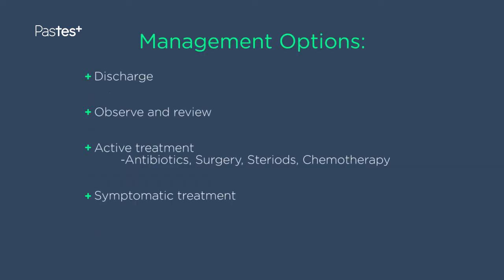The four management options in any case are: send home, keep under close review, specific active treatment, or symptomatic and supportive care. For active treatment there are really only four things that make a substantial difference to the underlying cause of illness: antibiotics, surgery, steroids, and chemotherapy. In an uncertain situation, always go back to this list and consider whether any of these apply.